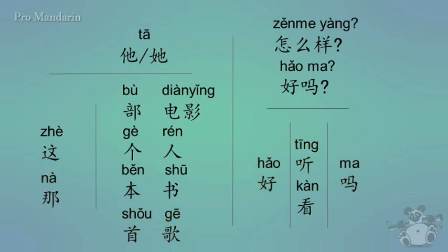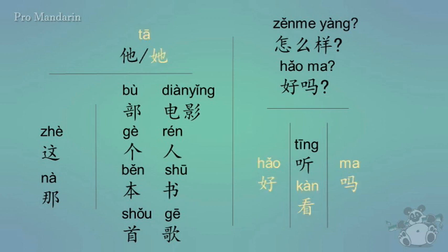Let's get a little bit of practice in. After I ask each question, I'll give you a few seconds to answer. Feel free to pause the video if you need more time. For the first one, how would you say 'does she look good' or 'is she good looking'? Tā hǎo kàn ma? Or another way: tā zhǎng de hǎo kàn ma? Zhǎng de is another way to say how someone looks.